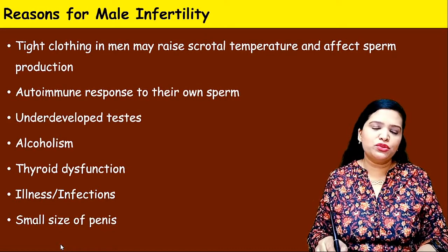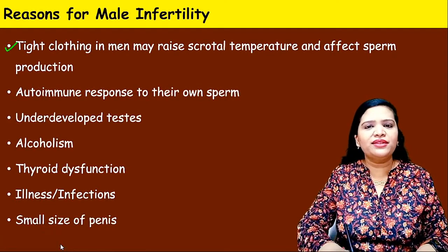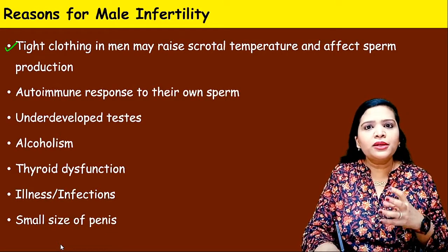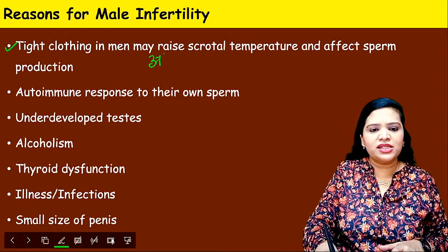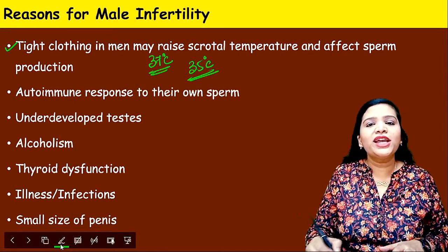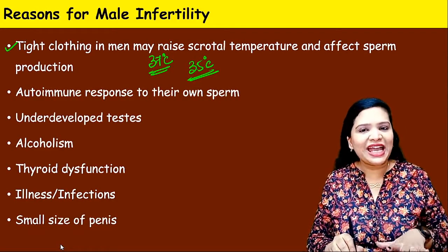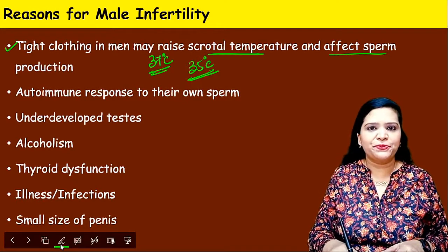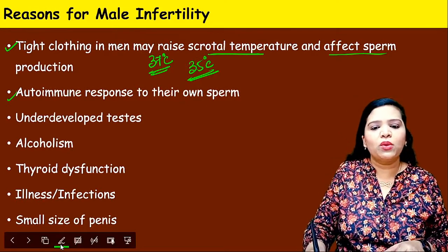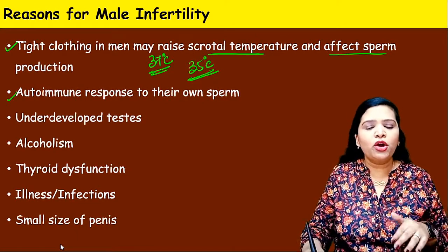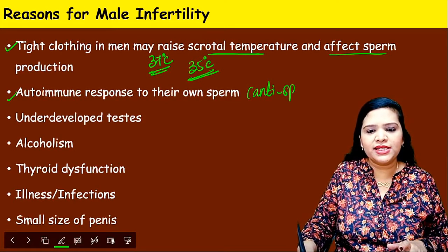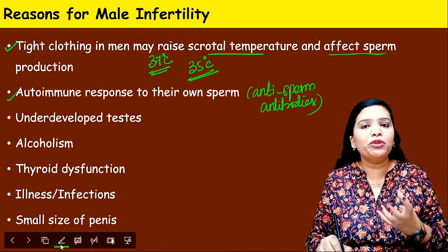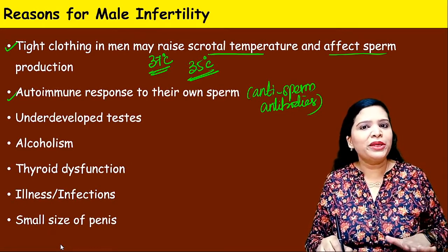Another reason for male infertility is tight clothing, which is a common problem in this generation. Men wearing tight innerwear or tight jeans raises the scrotal temperature. The scrotum temperature should be less than body temperature — body temperature is 37°C, so scrotal temperature should be around 35°C or less. Only at this temperature will sperm production be good and sperms be healthy. Tight clothing raises scrotal temperature and affects healthy sperm production.